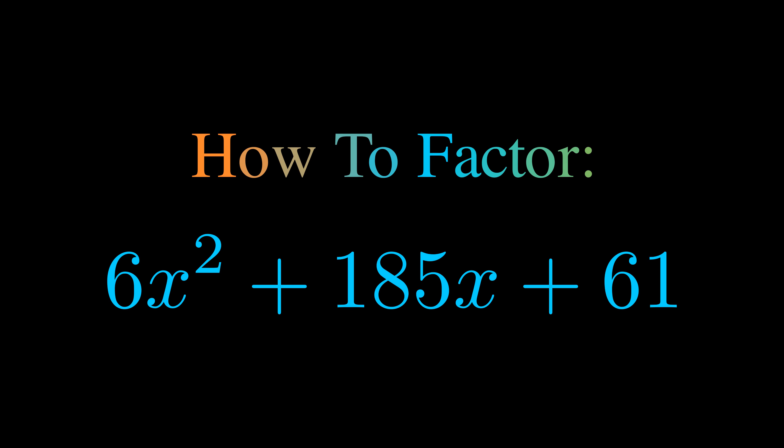In this video we're going to learn how to factor this equation. Step one when factoring an equation of this form is to multiply the a value by the c value. Here we can see that our a value is the coefficient on the x squared term and our c value is the constant term. When we multiply these two values we get this value here in magenta.